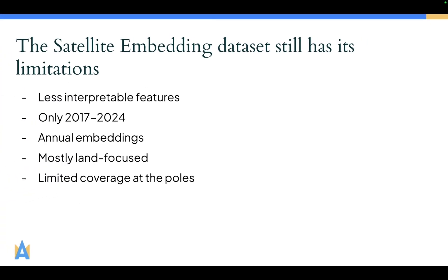However, the satellite embedding dataset still has its limitations. All of these bands might give higher accuracies, but we also become less interpretable, because right now band number 10 doesn't really have any physical meaning. Moreover, the released dataset only covers 2017 to 2024, which means you won't really be able to do any long-term studies with this dataset as of now. The embeddings are also annual and mostly land-focused, and there is also limited coverage at the poles.